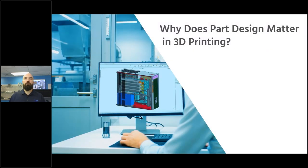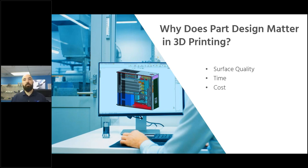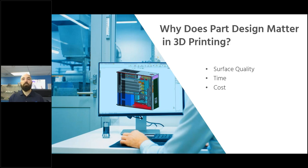Why do we even have to design parts for 3D printing? The whole purpose behind 3D printing is rule-less design — instead of being constrained by rules for milled parts or injection molding, 3D printing is supposed to open doors and give unlimited options. To a certain extent that's true, but there are design rules that, if held in check, will actually produce better parts with nicer surface finishes, produced faster and for less cost. Material cost can be quite pricey, so having good design intent upfront can save a lot of time in the long run.